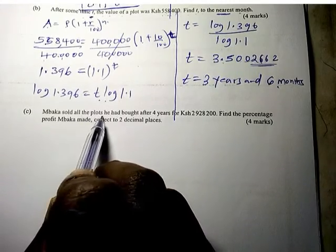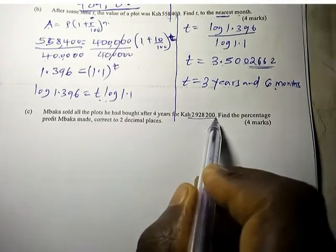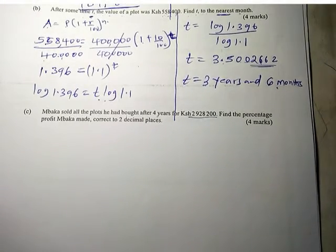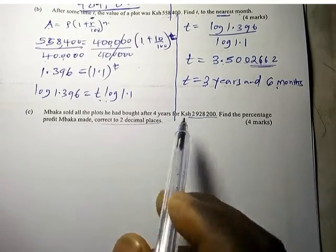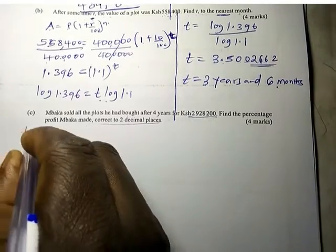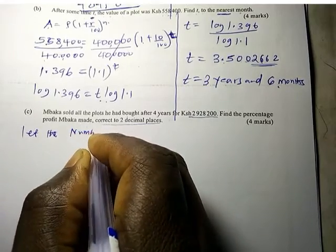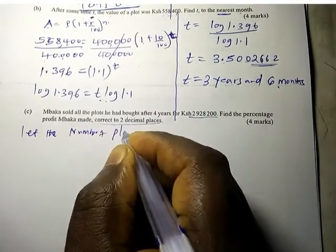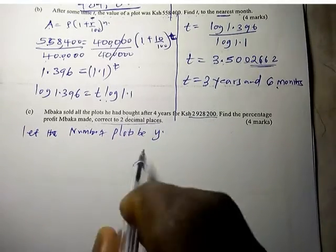Mbaka sold all the plots he bought after 4 years for Kenya shillings 2,928,200. Find the percentage profit Mbaka made, correct to two decimal places. What we don't know is how many plots Mbaka had, so let the number of plots be y.